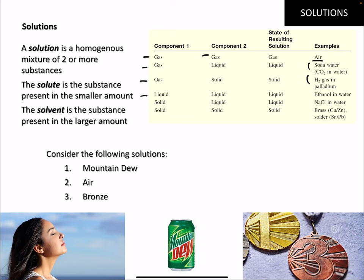Liquids can dissolve in liquids, like ethanol and water. A solid dissolved in a liquid is the solution we think of most often — sodium chloride dissolved in water. And you can have solid-solid solutions: brass is a mixture of copper and zinc, and solder is tin and lead. All examples of solutions.